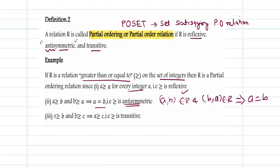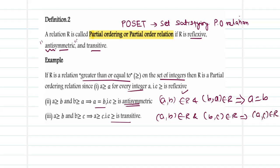Next, if A ≥ B and B ≥ C, we notice that A is obviously ≥ C, so the relation is transitive. (A, B) belonging to the relation and (B, C) belonging to the relation implies (A, C) belongs to the relation. Hence, the relation 'greater than or equal to' is considered a partial order relation.